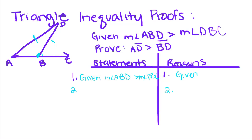Think back and remember the triangle inequality. If we can prove that the angle opposite one side is greater than the angle opposite another side, then the first side is greater than the second side. That's what we're going to try to do.